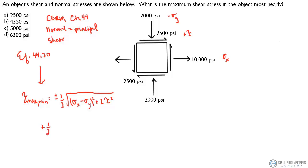So the maximum is going to be positive. So 1 half square root of this whole thing. So x stress is 10,000 psi minus negative 2,000 squared plus 2 times 2,500 squared.